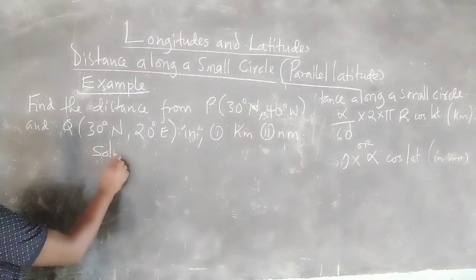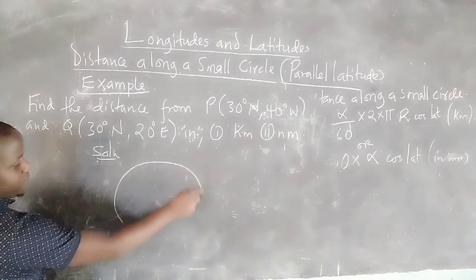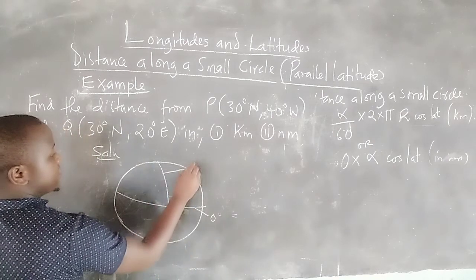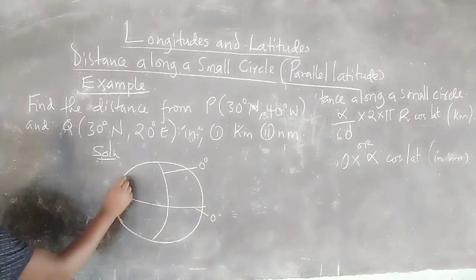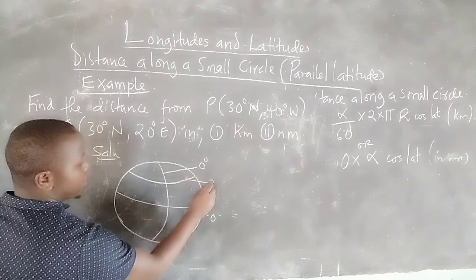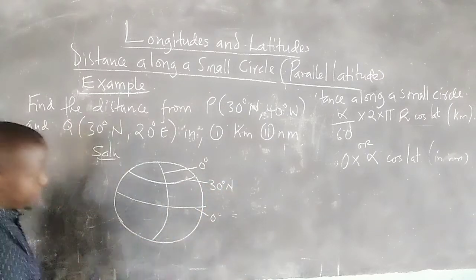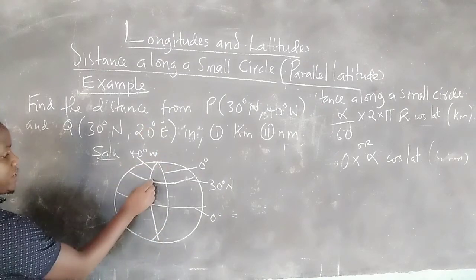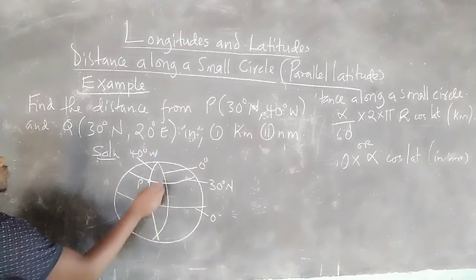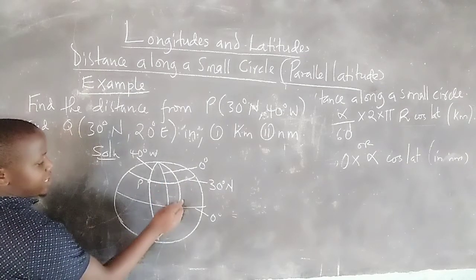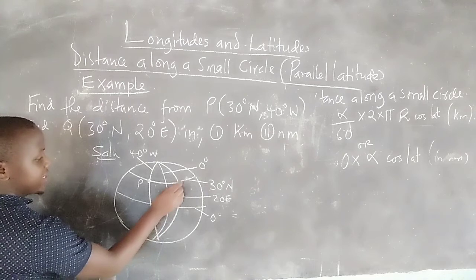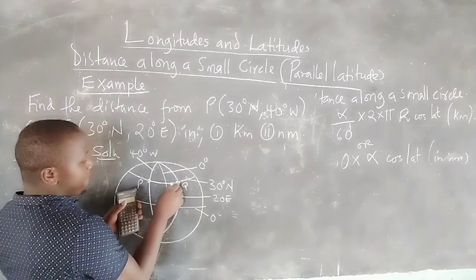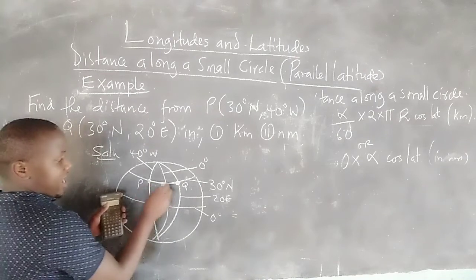When we sketch the positions of these two places, we have the 0° equator and 0° prime meridian. Along latitude 30° North, to the west we have 40° West where we place P, and to the east we have 20° East where we place Q. Therefore from P to Q we are running across a latitude — a small circle.